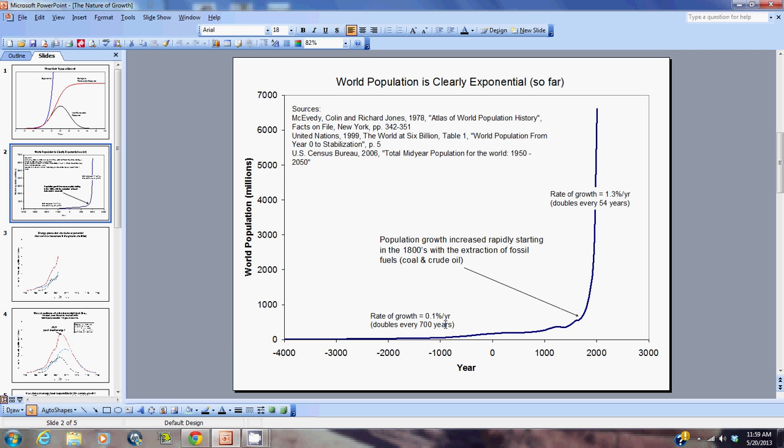So we went from the population of the world doubling every 700 years to the population of the world doubling every 54 years, which is quite a drastic increase in the rate of growth of population. And what can be attributed to this is the abundance of fossil fuel. So back in the 1800s, that's when coal started to be mined pretty prodigiously, and in about the year 1850 we started pulling liquid oil out of the ground, starting with Spindletop in the U.S.